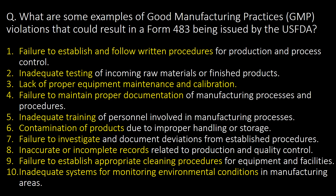What are examples of GMP violations that could result in a Form 483 being issued? The 10 examples include: failure to establish and follow written procedures, inadequate testing, lack of proper equipment maintenance and calibration, failure to maintain proper documentation, inadequate training, contamination of products, failure to investigate, inaccurate or incomplete records, failure to establish appropriate cleaning procedures, and inadequate systems for monitoring environmental conditions.